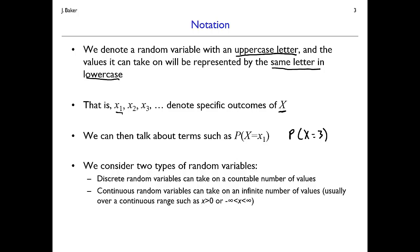Without a fully rigorous treatment of probability theory — which would require measure theory — we'll categorize random variables into two practical types. One is discrete random variables, which take a countable number of values; I can list out all values that variable could take. The other is a continuous random variable, which can have an infinite number of values over some continuous range — either the entire real line from negative infinity to infinity, or some subset like all positive values or all values between 0 and 1. We need to treat these two cases separately.